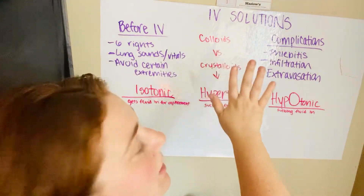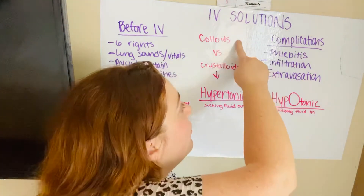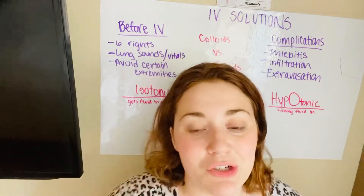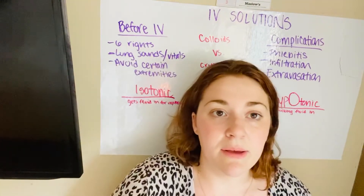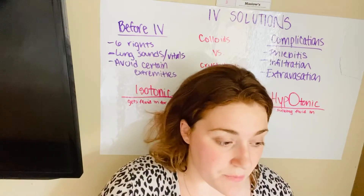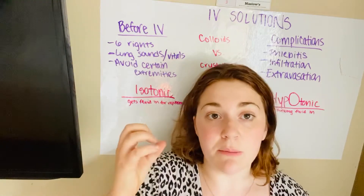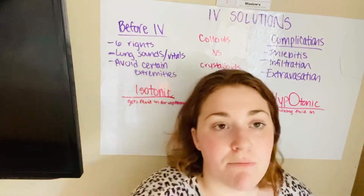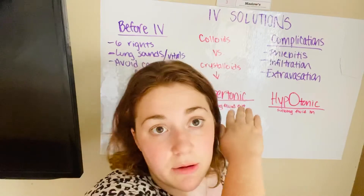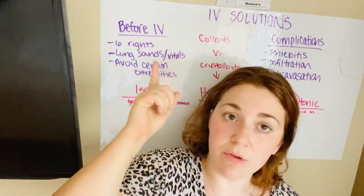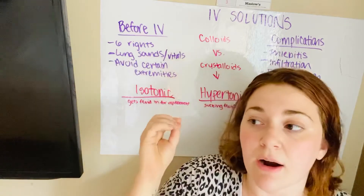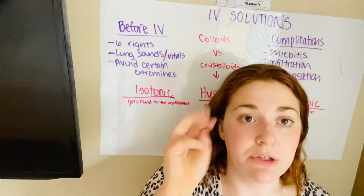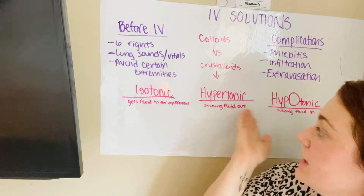Now let's talk about the two different types of IV solutions: colloid versus crystalloid. Colloids — think like coal — they're heavy, big, giant molecules, usually albumin, so protein. They could be blood products, but they're just these bigger molecules that don't usually dissolve or mix well with other solutions. This is used when the patient cannot tolerate crystalloids. Crystalloids are the main type of IV fluid — crystals that can mix easily — and there are three types: isotonic, hypertonic, and hypotonic.